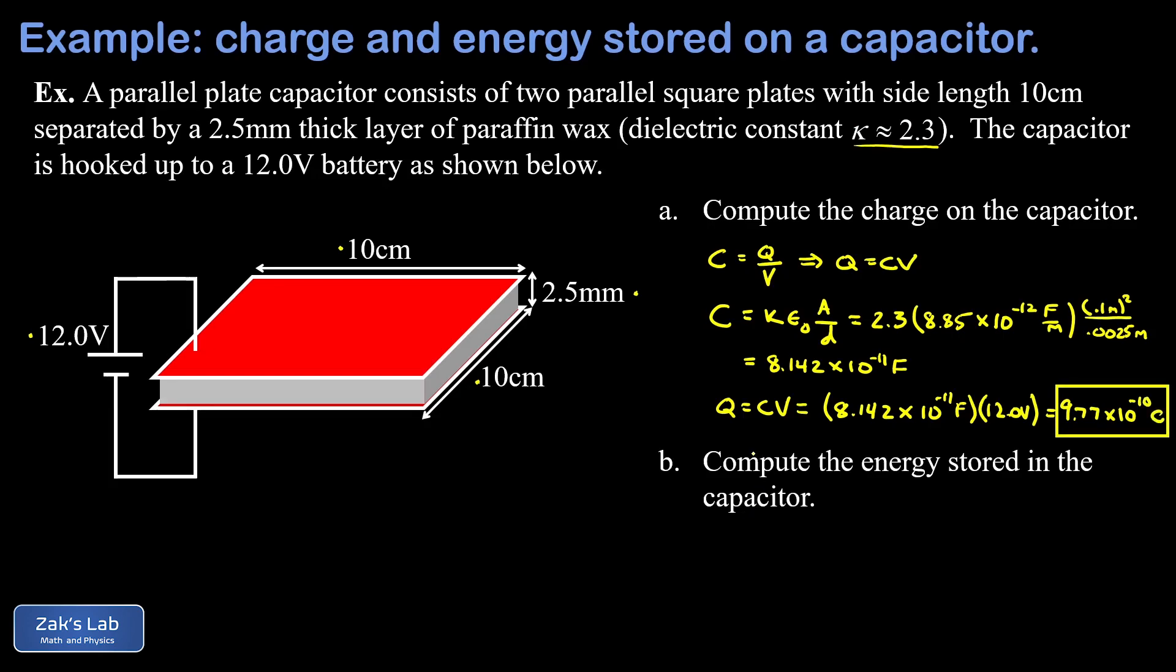Next, to get the energy stored in the capacitor, we can use the formula one half cv squared. And we plug in our capacitance, 8.142 times 10 to the negative 11 farads, and then our potential difference was 12 volts, and we square that. And to 3 significant digits, we end up with 5.86 times 10 to the negative 9 joules.